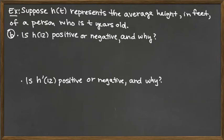So now let's look a bit more at these two functions. Is h of 12 positive or negative and why? Well, we already assessed that h of 12 is measuring the average height of a 12-year-old. We're not going to talk about negative height, so it would definitely be positive. H of 12 is positive because negative height doesn't make sense.